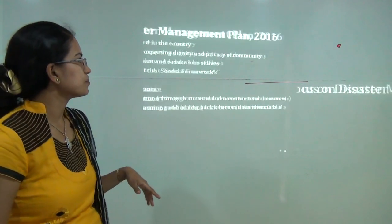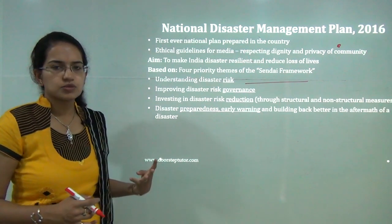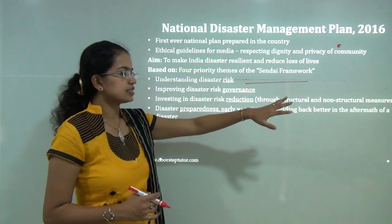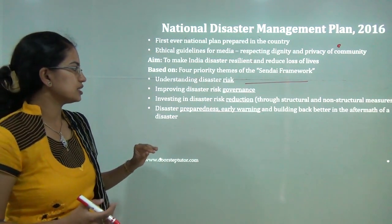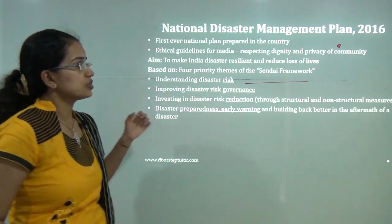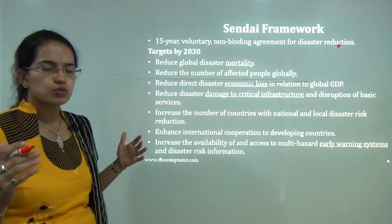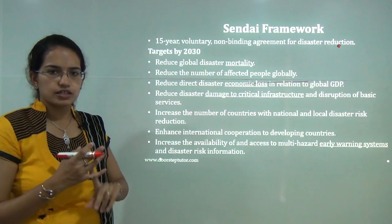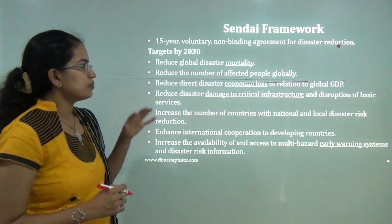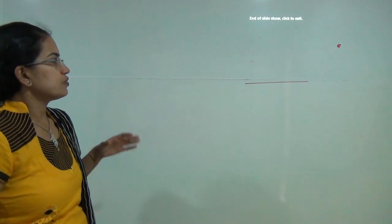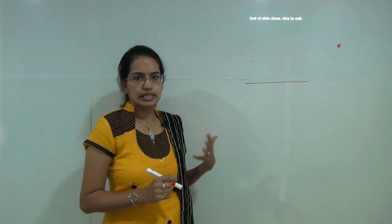Under disaster mitigation: the National Disaster Management Plan was laid down in 2016 with four priority themes from the Sendai Framework — understanding disaster risk, governance, reduction of disaster risk, and preparedness with early warning. The Sendai Framework is a 15-year non-binding agreement targeting 2030, focusing on reducing economic loss, providing early warning systems, protecting critical infrastructure, reducing disaster mortality, and promoting international cooperation. This concludes the major environment topics; one more session will cover additional expected questions for environment.